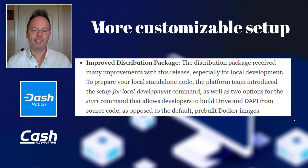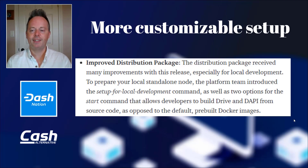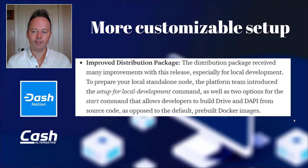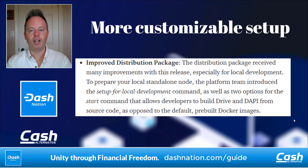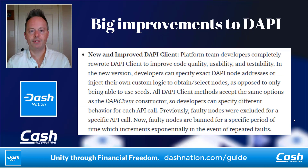It's also a more customizable setup. Before you could just have a Docker image and you had to run from that, but now you can set up your own local host. The distribution package received many improvements with this release, especially for local development. To prepare your local standalone node, the platform team introduced the setup for local development command, as well as two options for the start command that allow developers to build Drive and DAPI from source code, as opposed to the default pre-built Docker images. That's interesting for people who want to have a more hands-on approach with their programming.